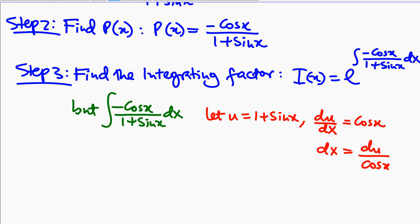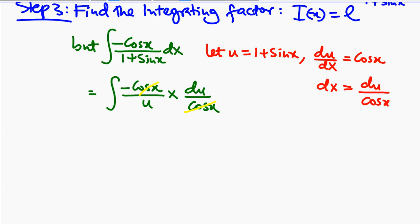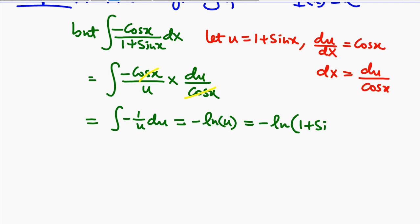Our integral will be negative cos x over u multiplied by du over cos x. The cos x terms cancel — remember, we have a negative — so what we end up with is the integral of negative 1 over u du, which will be negative ln u. We don't need to write the constant c here. So that will be equal to negative ln of 1 plus sin x.